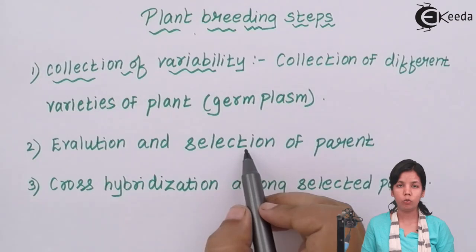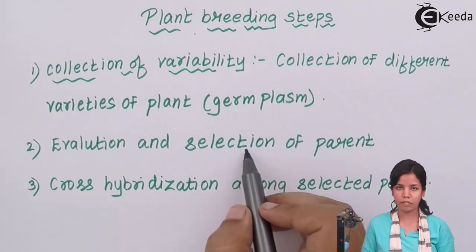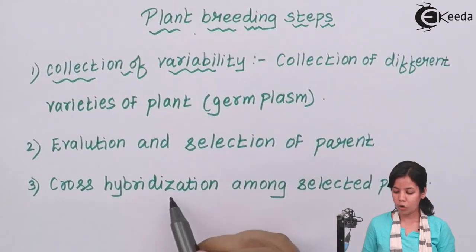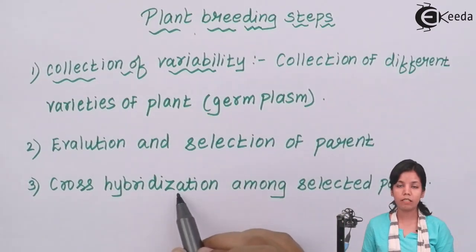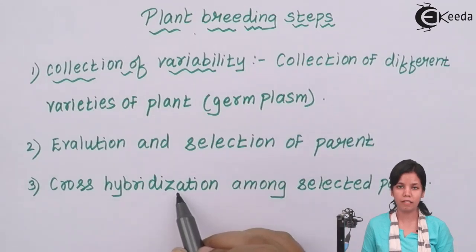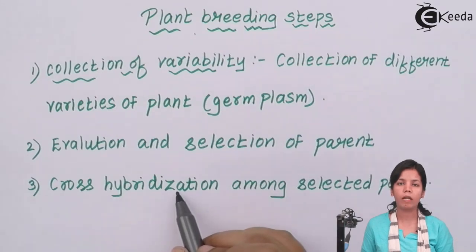In the next process you select the parents — that will be two parents. The third process is cross hybridization among selected parents. In this process, the two sugarcane varieties you have selected as parents are hybridized or mixed together so that their protoplasm fuses together.